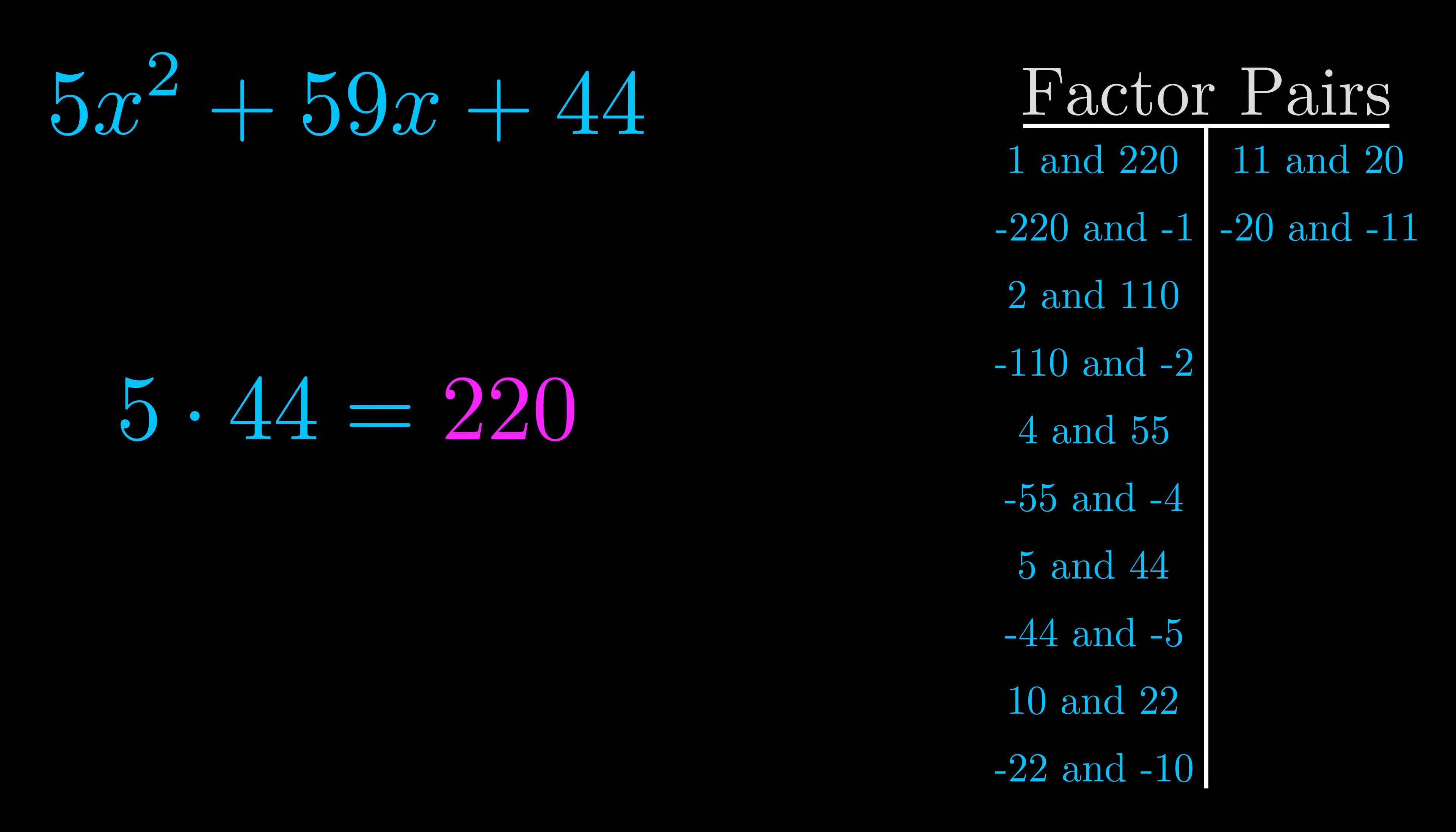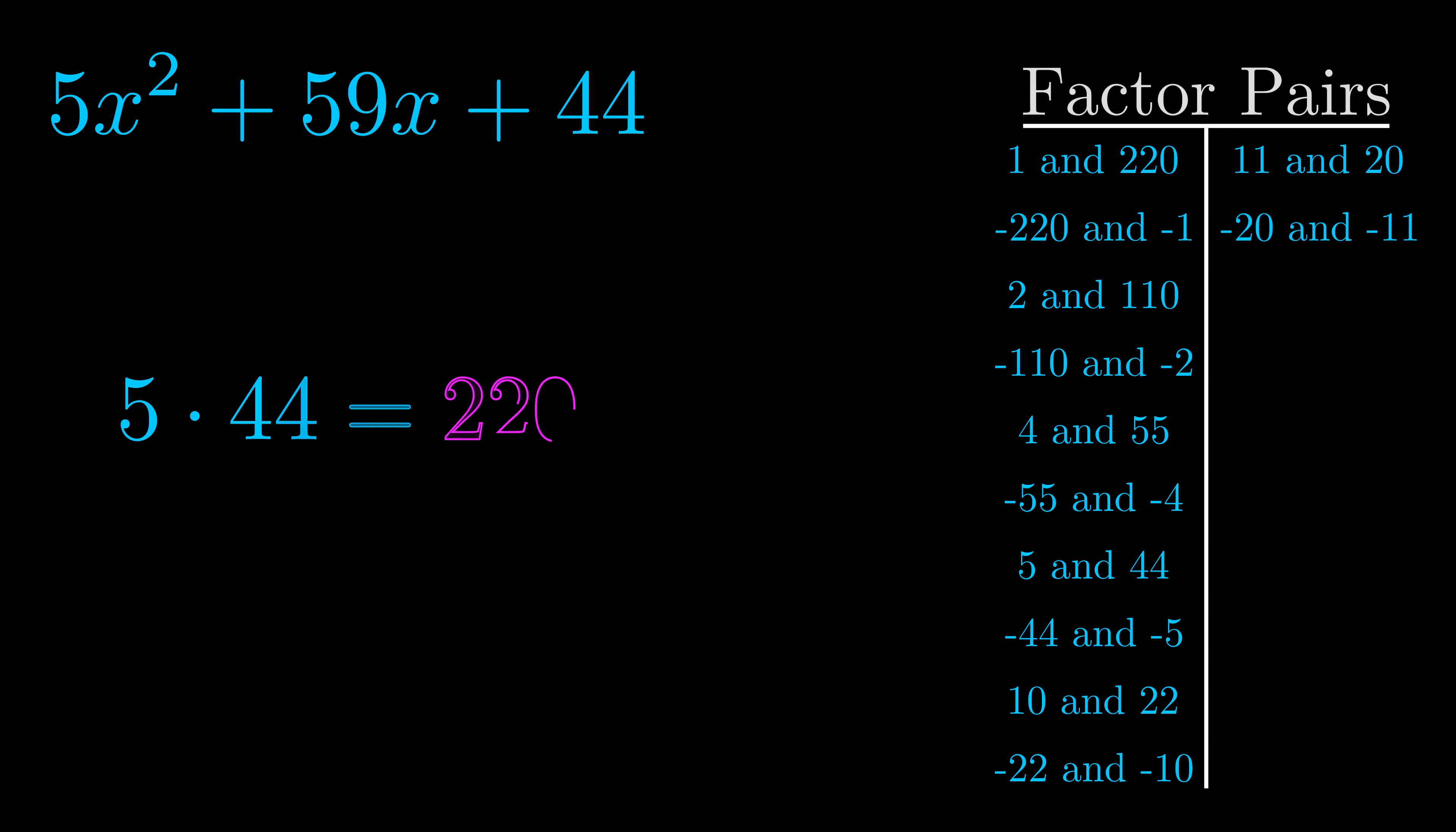Now once you have these factor pairs the goal is to find which of these pairs adds to the b value. The b value is the coefficient on the x term. That's the middle term, the one that we haven't done anything with yet. And really this is the only factor pair that we need.